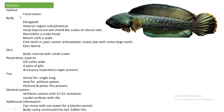The next fish is Channa. Its habitat is freshwater. The body is elongated and the anterior region is sub-cylindrical. The head is depressed and covered with shield-like scales on the dorsal side, resembling a snake's head. The mouth cleft is wide. Fine teeth are present in the jaws, vomer, and palate. The lower jaw has some large teeth. The eyes are lateral, located on both sides.